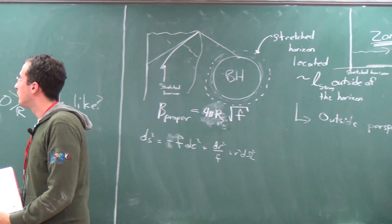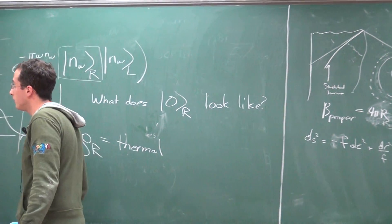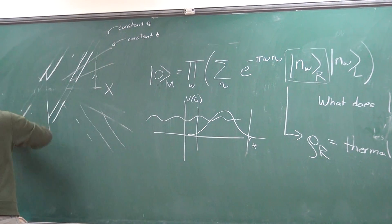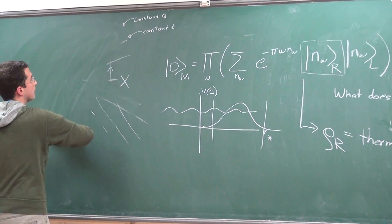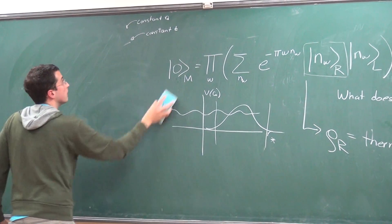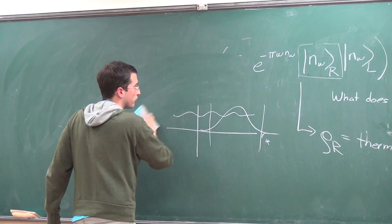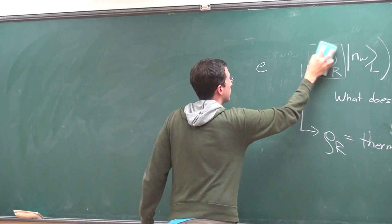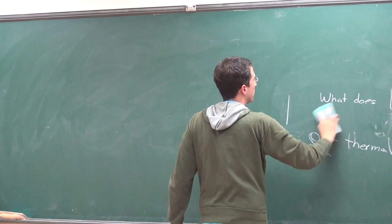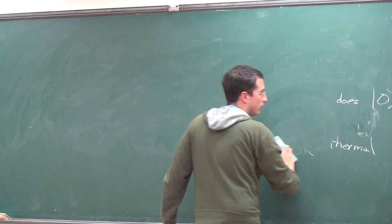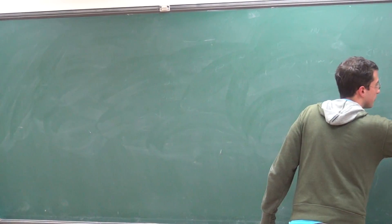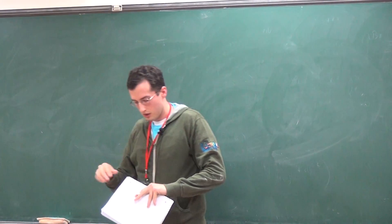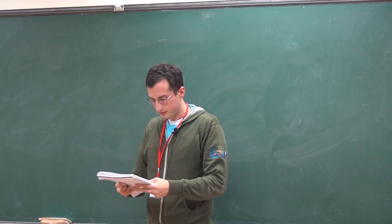I want to say a little bit more about what's an example of something you can do with the membrane — how should we think of the membrane? We should think of the membrane as a real physical object. It's a boundary to the world when we're on the outside, and there's some kind of theory living on it, which is the theory of the black hole. It's a weird theory and we don't know anything about it — this is one of those things classified as quantum gravity physics or Planck scale physics, which we don't know anything about.